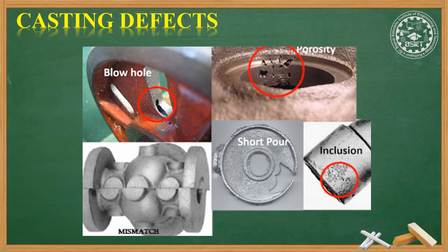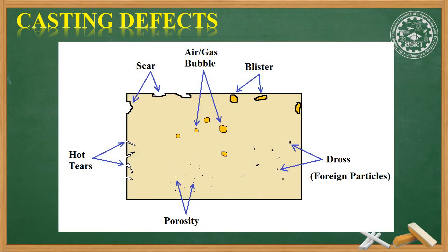Here we can see a few pictures showing blowholes, porosity, mismatch, short pour, and inclusion. One more picture where we can see hot tears, porosity, dross, blisters, air or gas bubbles, and scars. These are a few pictures of the various casting defects.